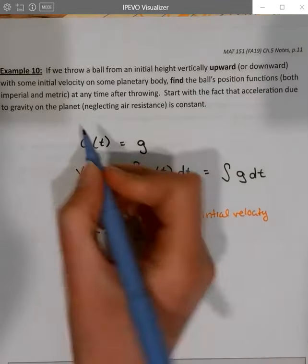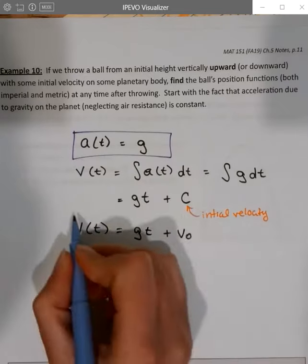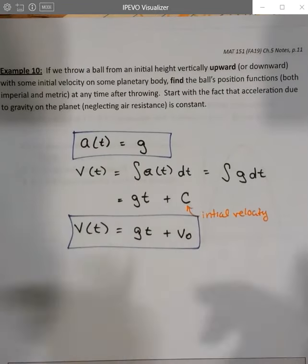So we would usually rewrite this as v of t equals gt plus v naught. We've got some equations for acceleration due to gravity, and if the only acceleration is due to gravity, then its velocity must be gt plus v naught.